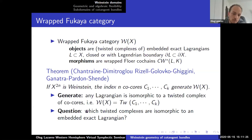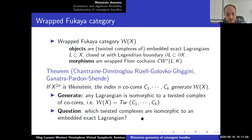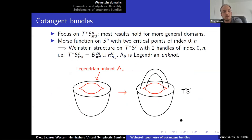Let me ask a question that will be relevant at the end of the talk — a kind of converse. Which twisted complexes are isomorphic to a single embedded exact Lagrangian? When you consider the Fukaya category as defined, it's a formal algebraic enlargement where you take twisted complexes — you've left the world of geometry. But which of those twisted complexes are actually isomorphic to something geometric? I'll get back to this question later.